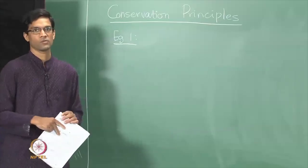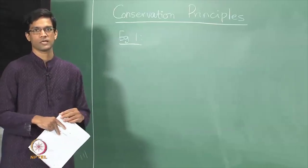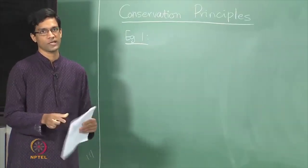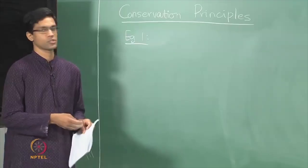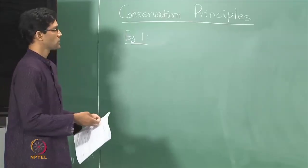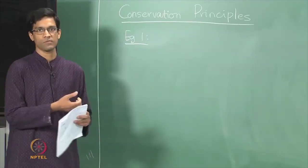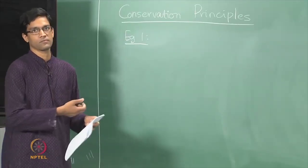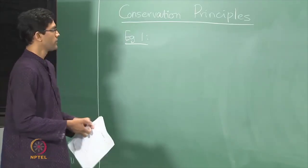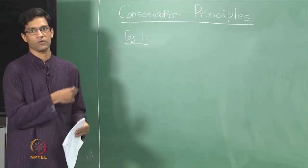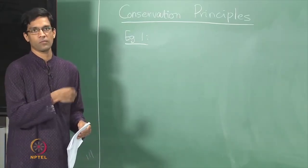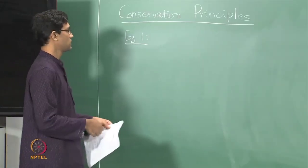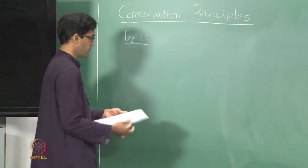Last time we talked about conservation principles through two examples: one in which the conserved quantity was the sum of the four positions of the four coins, the other in which the area of the figure formed by those points was the conserved quantity.